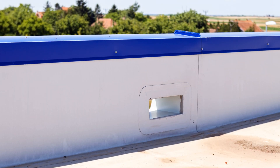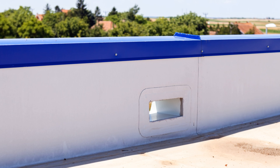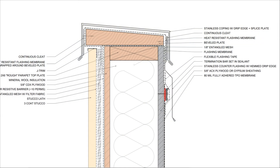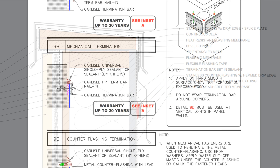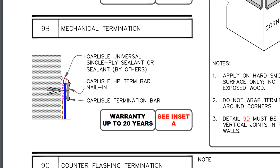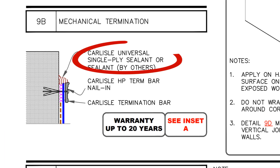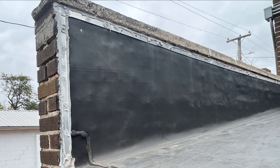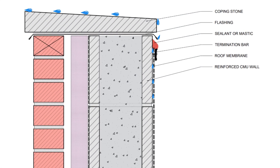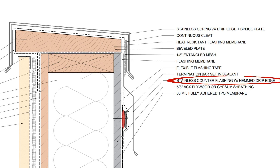Where the roof membrane terminates at the parapet wall, we have several options depending on conditions, but in nearly all cases we're going to want to provide a counter flashing detail above the termination bar to keep water away from that sensitive connection. A lot of manufacturers will recommend just running a bead of sealant or mastic above the termination bar, and while that's fine, ultraviolet light and heat from the sun will constantly be challenging that sealant, causing it to degrade over time. Without a counter flashing above the termination bar, water draining down the wall can end up leaking behind the termination bar and potentially behind the membrane.